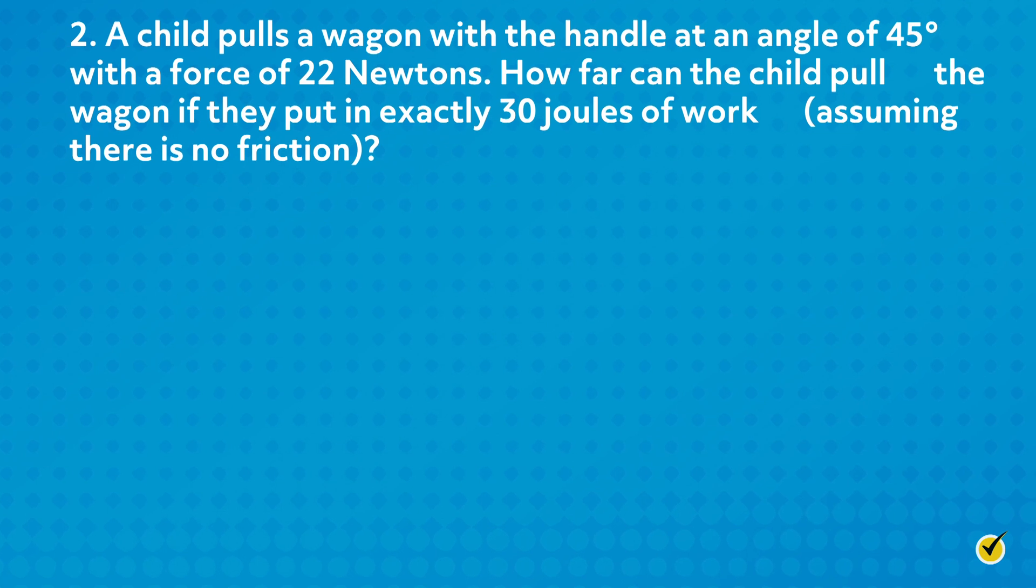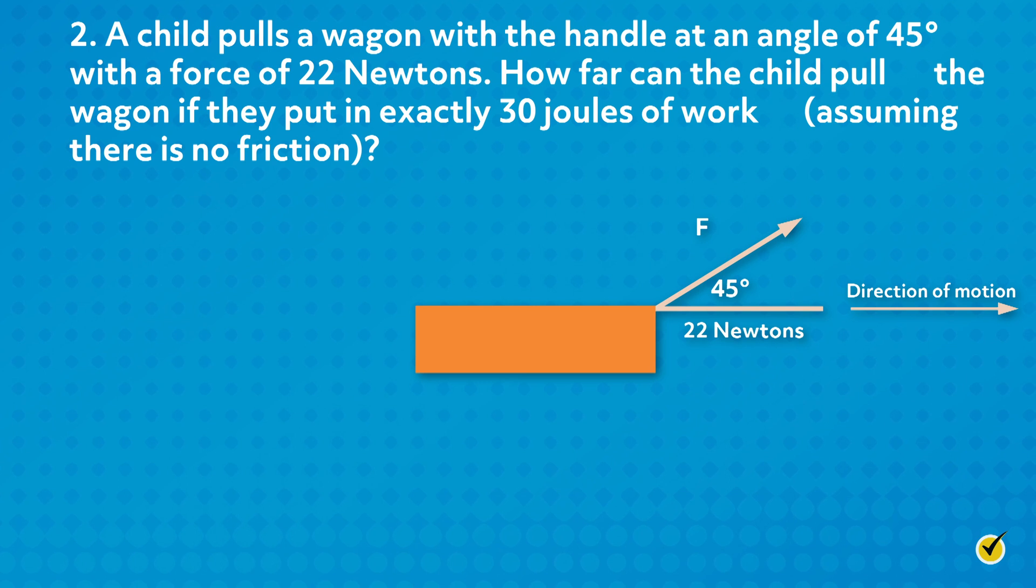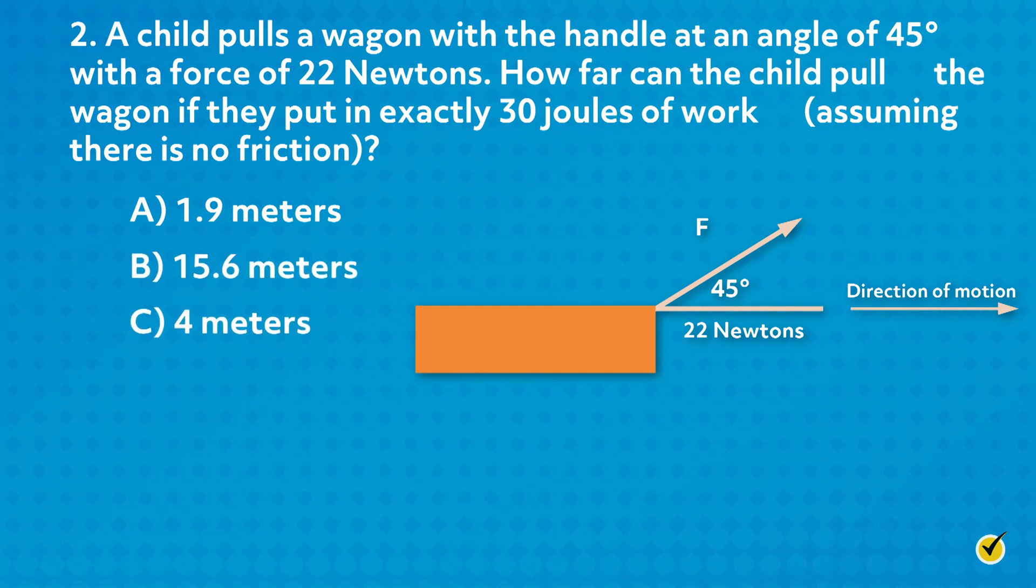Number 2. A child pulls a wagon with a handle at an angle of 45 degrees, with a force of 22 newtons. How far can the child pull the wagon if they put in exactly 30 joules of work, assuming there is no friction? A. 1.9 meters. B. 15.6 meters. C. 4 meters. Or D. 1.4 meters.